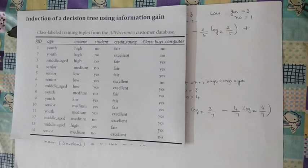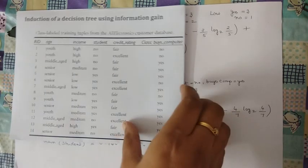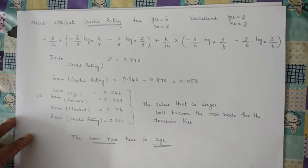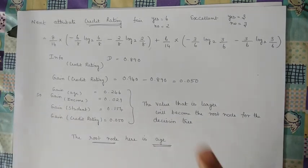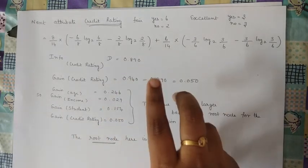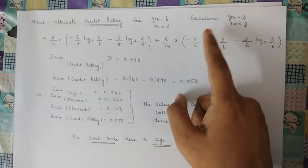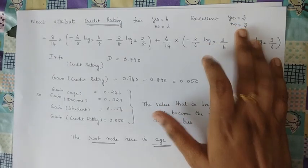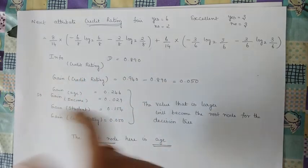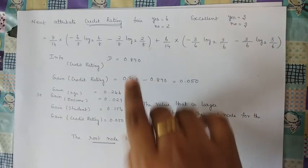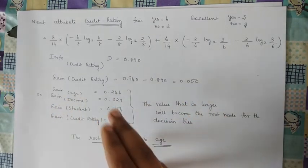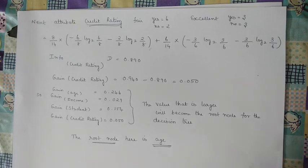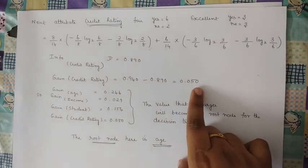Moving on to the fourth and last attribute — credit rating — which has two categories: fair and excellent. Credit rating fair, buys computer: 6; does not buy: 2. Credit rating excellent, buys computer: 3; does not buy: 3. Substituting gives Info_credit_rating(D), and Gain(credit_rating) = Info(D) − Info_credit_rating(D) = 0.050.